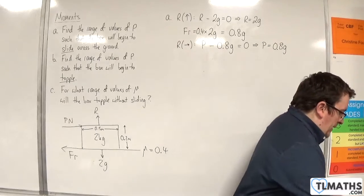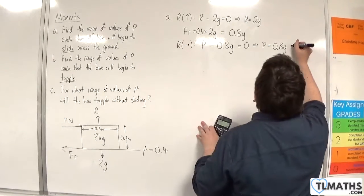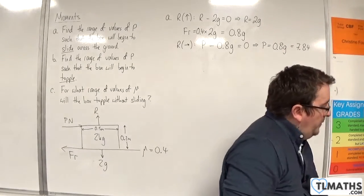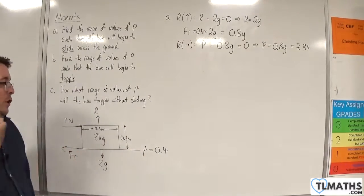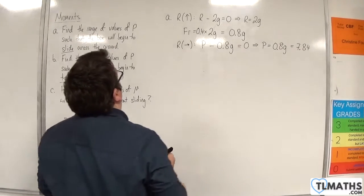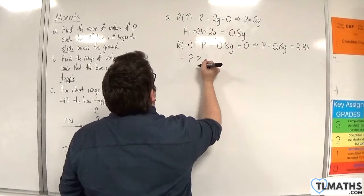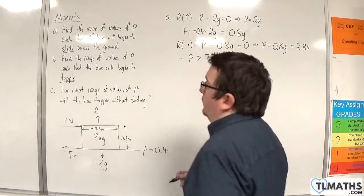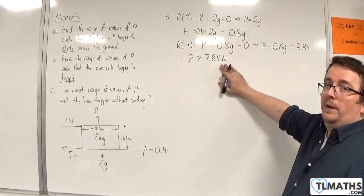0.8 times 9.8 is 7.84. So if p is 7.84, then it's on the point of moving. The range of values of p such that the box will begin to slide across the ground, the answer to that would have to be p is greater than 7.84 newtons. If that is the case, then it will begin to slide.